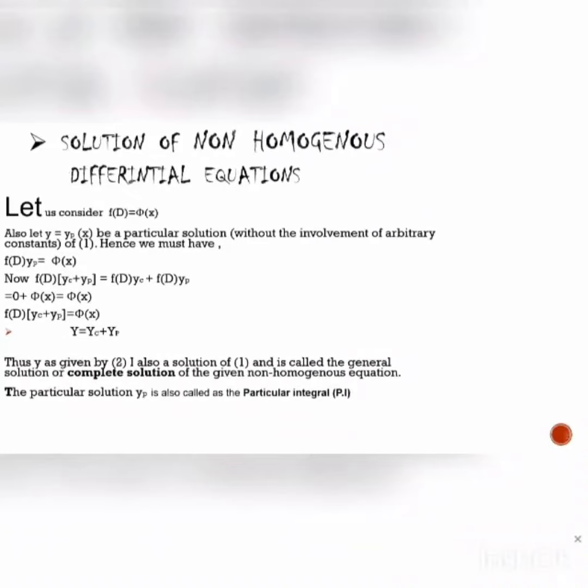Hello everyone, now we learn about solution of non-homogeneous differential equations. Let us consider f(D) = φ(x). Also, let y = yp(x) be a particular solution without the involvement of arbitrary constants. Hence, we must have f(D)yp = φ(x).